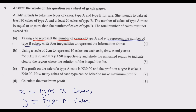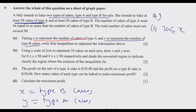Now let us go to the information we've been given. We are told the lady intends to bake two types of cakes — type A and B. She intends to bake at least 30 type A cakes. 'At least' means the minimum; 'at most' means the maximum. So inequality one: X must be greater than or equal to 30. Then at least 20 type B cakes — 20 is the minimum — so inequality two: Y is greater than or equal to 20. We already have two inequalities out of four.